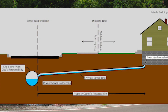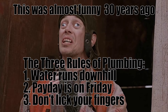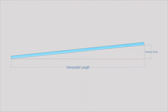The first thing we should do is define grade. Grade, in reference to piping, is a slope or angle on the pipe so water can drain from the high point to the low point. When we're looking at pipe grade, we're looking at a comparison of how far a pipe will drop vertically over a given distance horizontally.